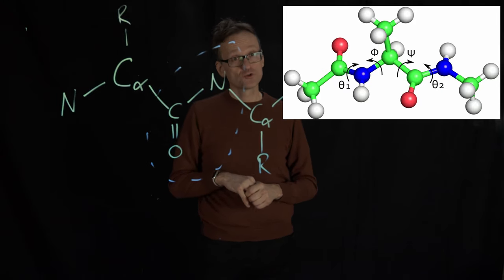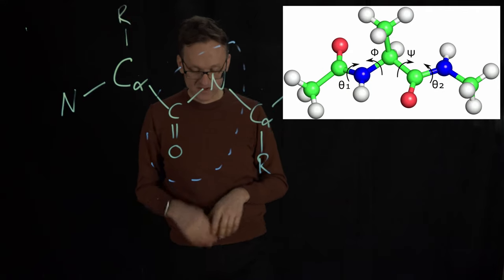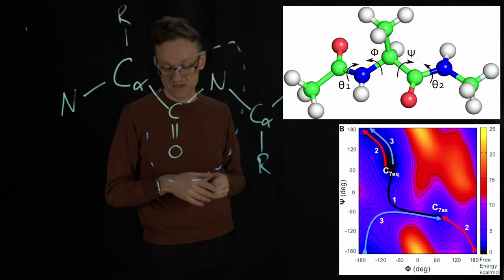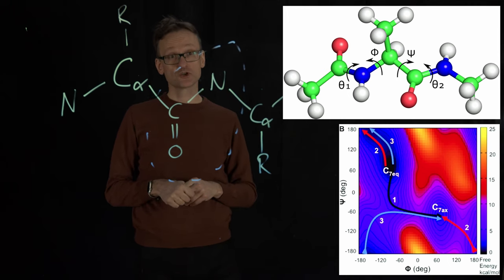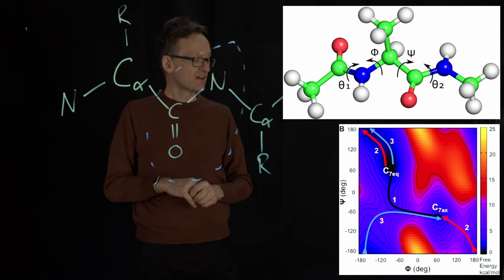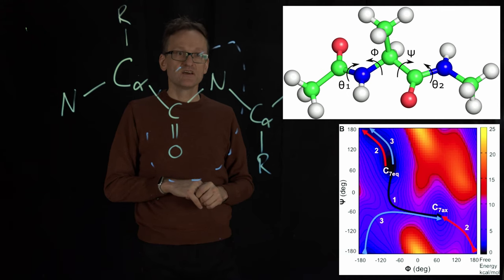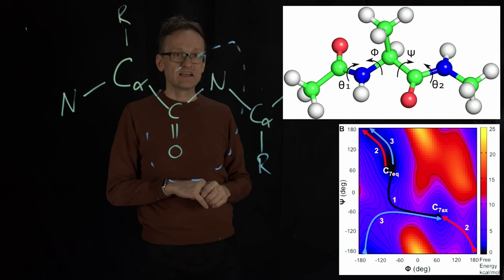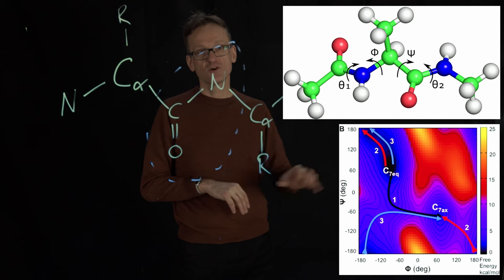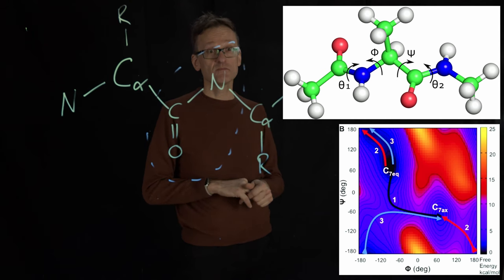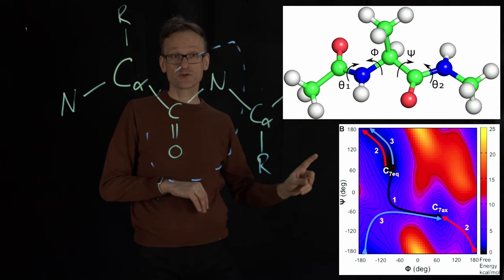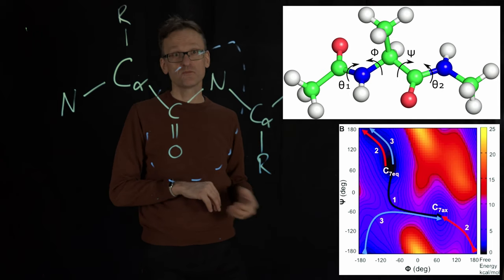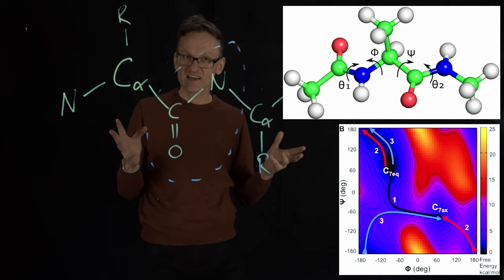You could draw that in MATLAB or something, and a very simple representation would just be a two-dimensional diagram here. In this case, blue means good low energy and red means bad high energy. It turns out you have at least two areas here that are quite good where the molecule is likely to spend time, and at least one area because this diagram is periodic—if you go out on the top, you're going to re-enter on the bottom. Remember, the angles are periodic.